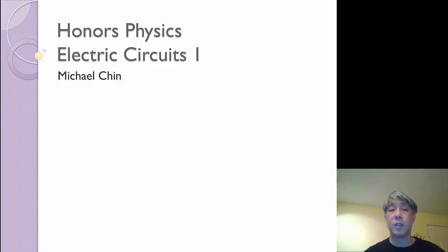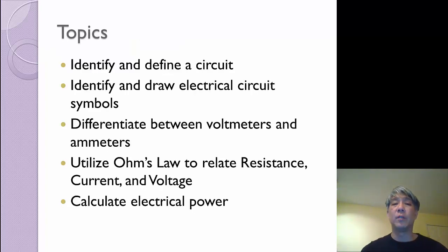So this video begins the first in a series of videos about electric circuits and the resistors in the circuits and how we calculate the currents and voltages associated with those circuits. First of all, we're going to identify and define what a circuit is and the various symbols that we'll be using in this circuit. We'll also be talking about voltmeters and ammeters, which measure our voltage and our current. And then I'm going to introduce you to Ohm's law, which is the primary formula that we're going to be using in this unit. And the last one is how we calculate power in an electrical sense.